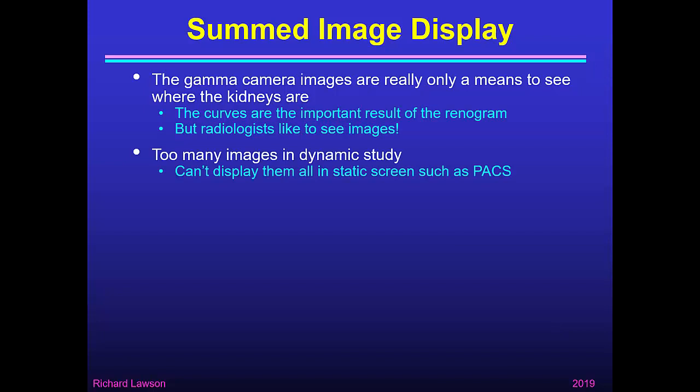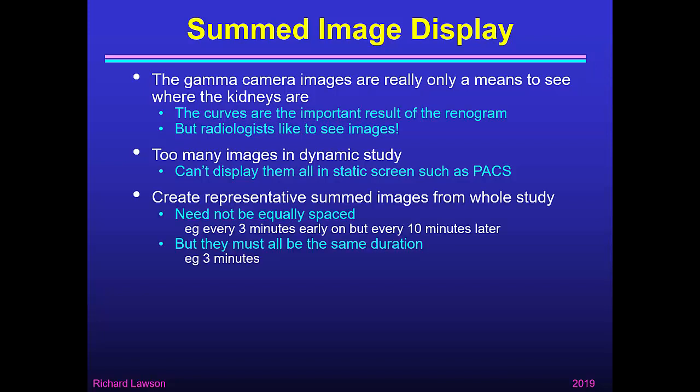There are too many images in the dynamic study to show them all. If there's one image every 20 seconds, there may be more than 100 images in a typical renogram, and you can't display all of those on a static screen such as a picture archiving system. So it's usual to create a series of representative summed images. These needn't be equally spaced — early on when things are changing quickly we may want one image every three minutes, but later every ten minutes will be sufficient. However, they must all be of the same duration, for example all three minutes, rather than some three, some five, and some ten minutes duration, otherwise the total counts in each image won't be comparable.